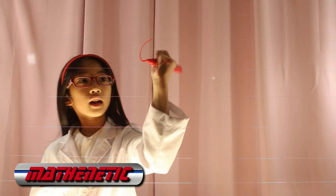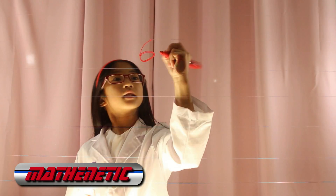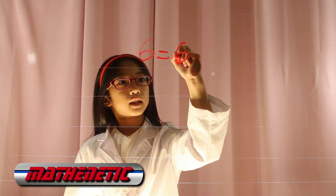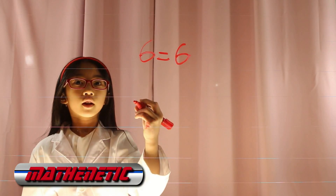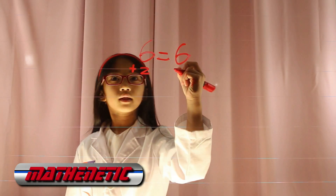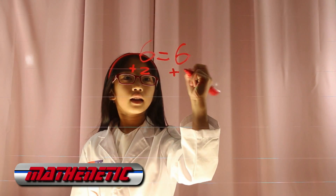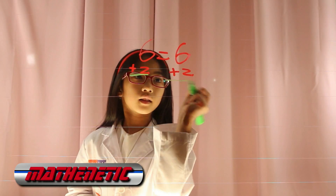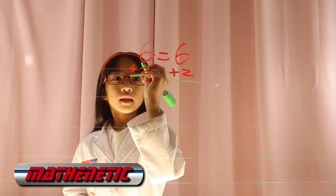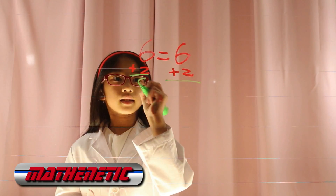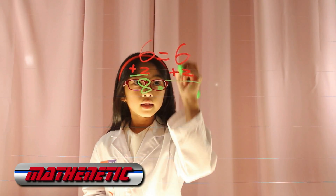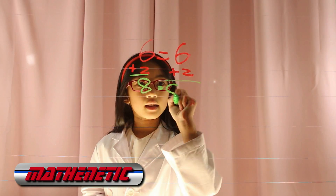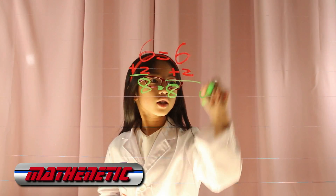Let's start with addition. Say you have 6 equals 6. We'll add 2 on one side, then you have to add 2 on the other side. 6 plus 2 is 8, and 6 plus 2 is 8. Check!